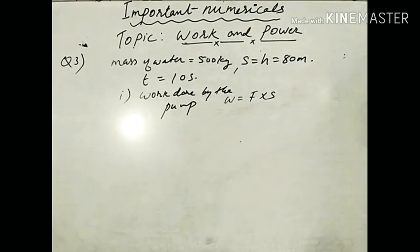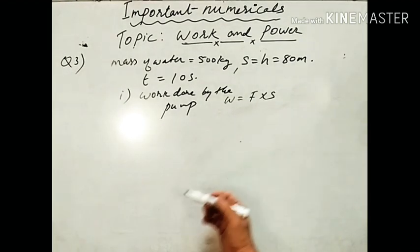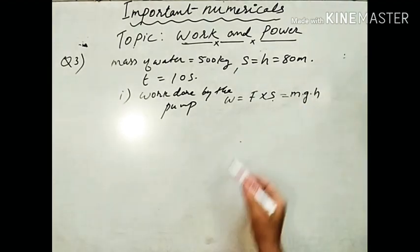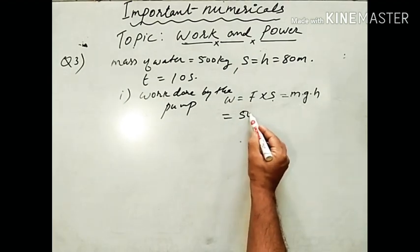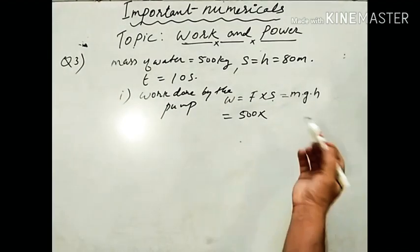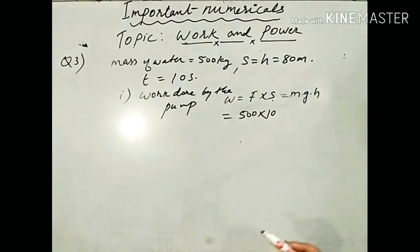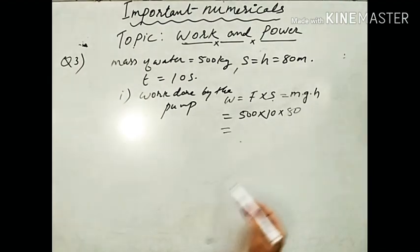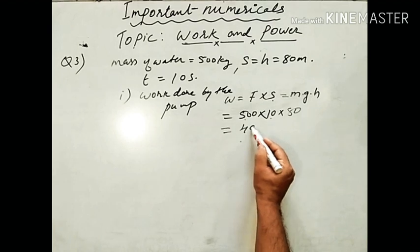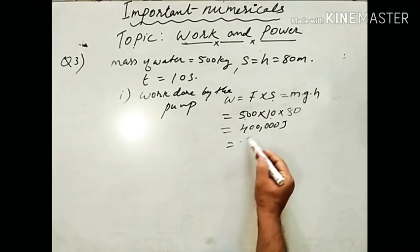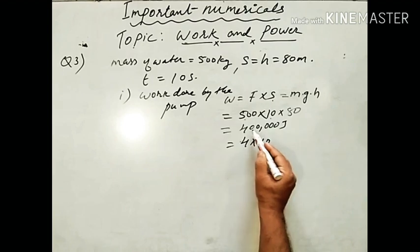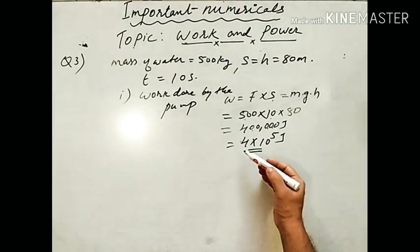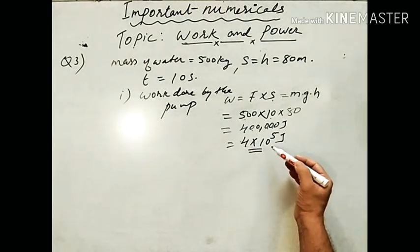Work done by the pump: W = F × S = mgh. Mass = 500 kg, g = 10, H = 80 m. So W = 500 × 10 × 80 = 400,000 Joule = 4 × 10⁵ Joule.